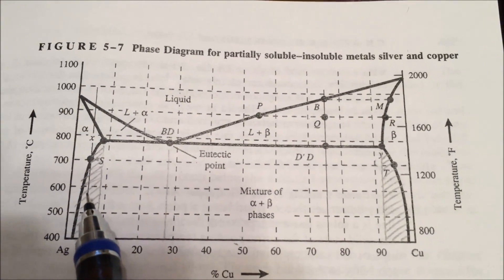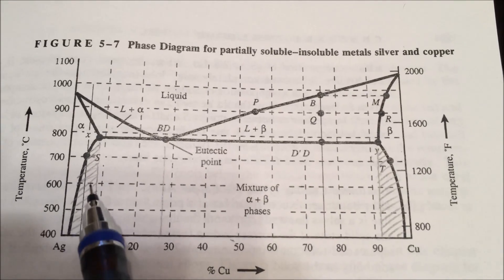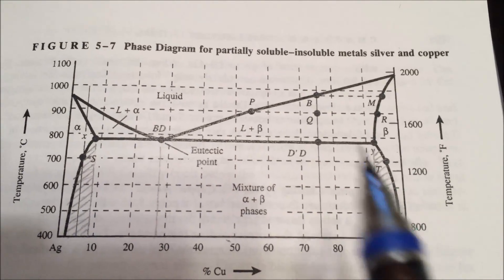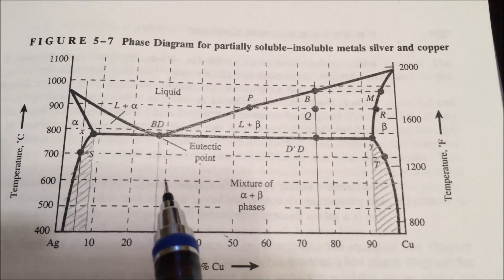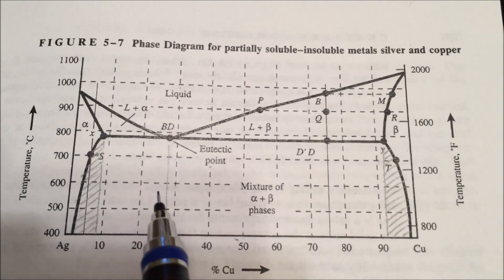You only draw the tie lines to alpha and beta if you're in this region or this region. Like I said, other than that, in here you would draw beta eutectic, and in here you would draw alpha eutectic.